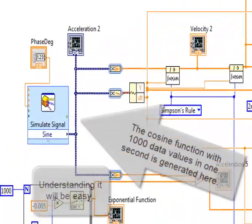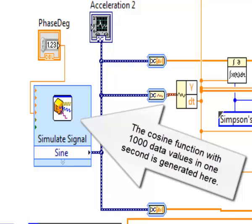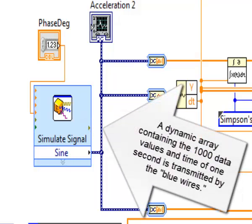The cosine function with a thousand data values in one second is generated here. A dynamic array containing 1000 data values and time of one second is transmitted by the blue wires.